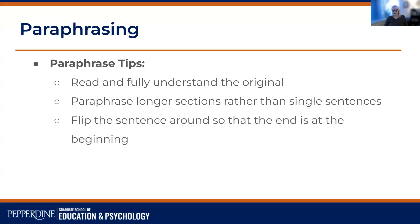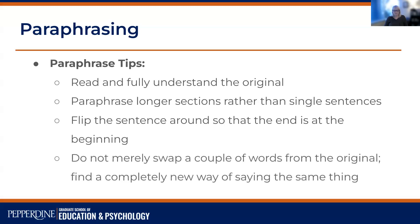Another tip: if you are working on paraphrasing only a single sentence, try to flip the sentence around. What I mean by that is to change the grammar of the sentence so that the subject in the original sentence becomes the object, or is placed toward the end of the paraphrase sentence, and vice versa. Patch writing is swapping out a couple of words from the original with synonyms — instead, find a completely new way of saying the same thing.